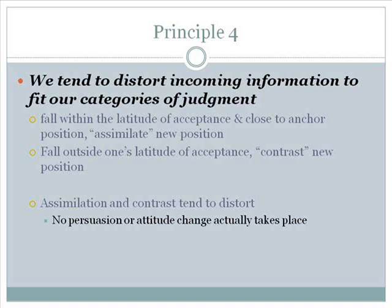Social judgment theory states that people distort incoming messages depending upon the anchor position they hold on a given issue. If incoming messages fall within the latitude of acceptance and are close to one's anchor position, then people will assimilate the new position. If incoming messages fall outside one's latitude of acceptance, then people will contrast that new position — that is, they will push the new position even farther away from themselves and make it seem worse than it really is. Assimilation and contrast tend to distort the position of the new information, so no persuasion or attitude change actually takes place. If one contrasts, one pushes the new information out of the latitude of acceptance and most likely into the latitude of rejection. If one assimilates, one pulls the new information towards the anchor position and makes it seem like it is already a position they accept.